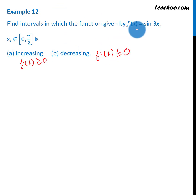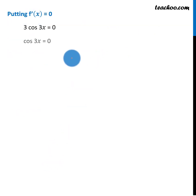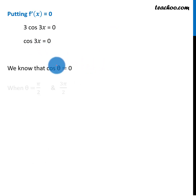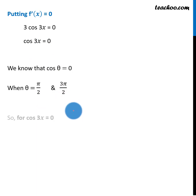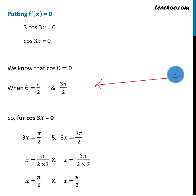First, we find f'x and set the derivative equal to 0. Cos(theta) is 0 at pi by 2 and 3 pi by 2, so 3x will equal pi by 2 and 3 pi by 2. Solving for x, we get x equals pi by 6 and pi by 2. These are our two critical points.